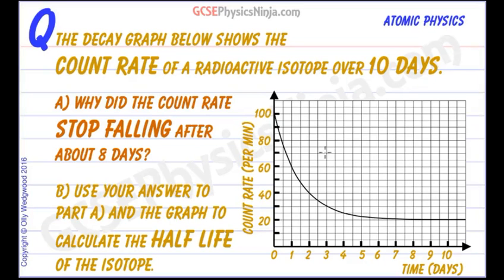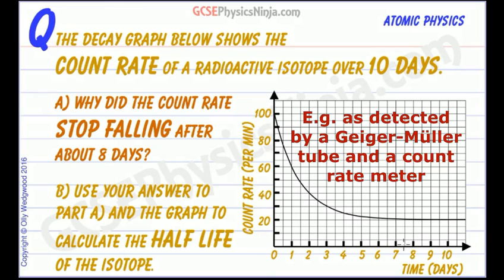This decay graph shows the count rate of a radioactive isotope as it decays over 10 days. We measure count rate in counts per minute on the vertical axis and time in days on the horizontal axis.